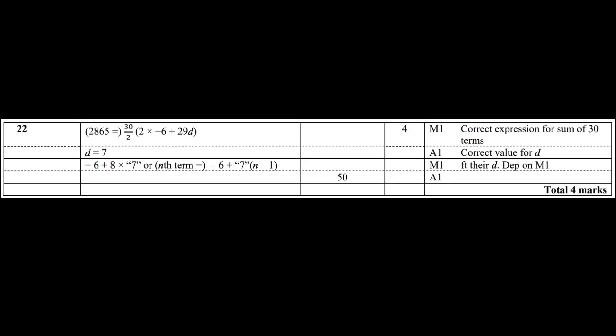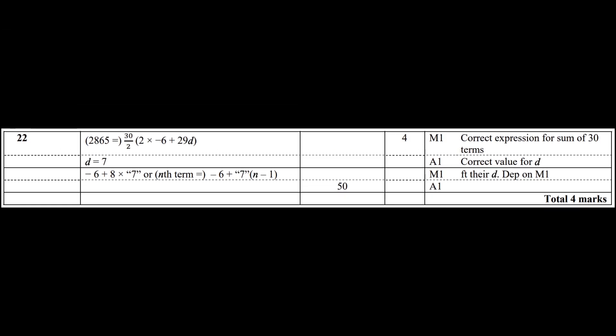So let's have a little look at the examiner's report. And yeah, a lot of students didn't know it existed. And yes, we've got the right answer. D is equal to 7, and the answer is equal to 50.